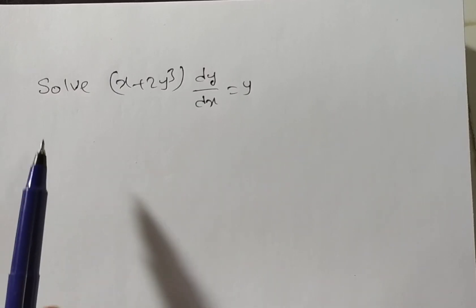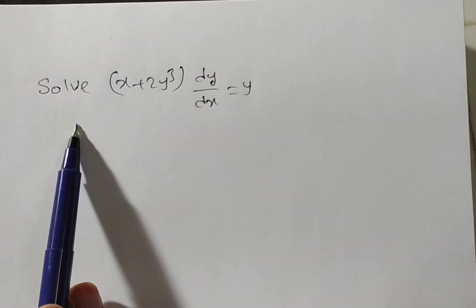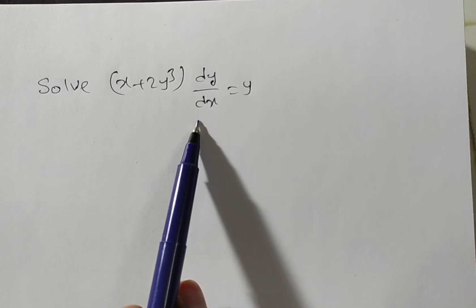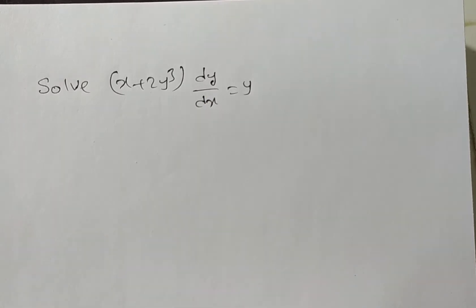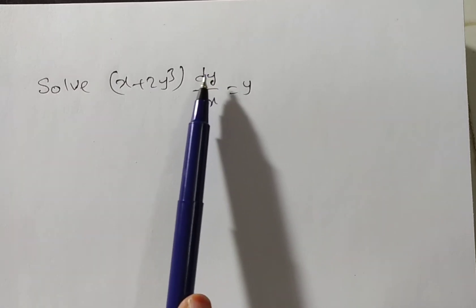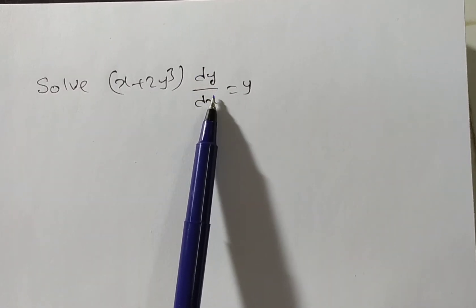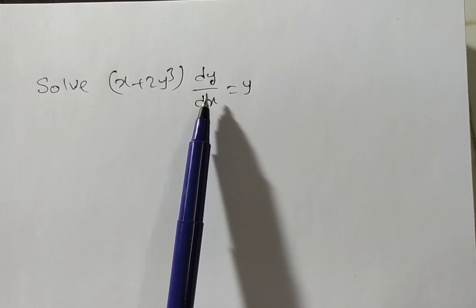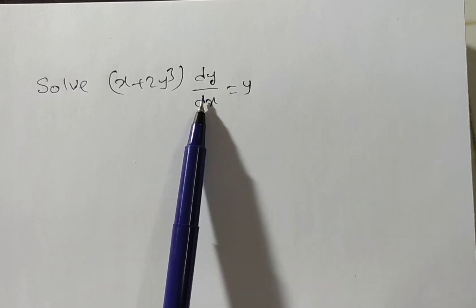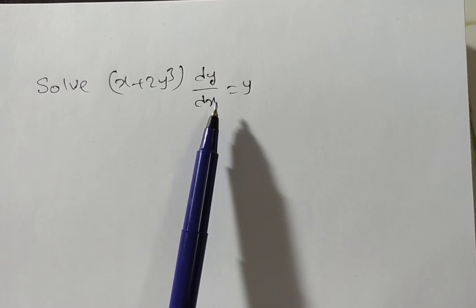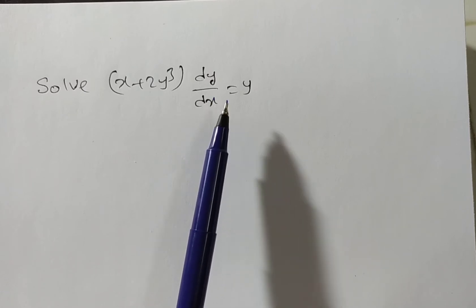Friends, the given problem is: solve (x + 2y³)(dy/dx) = y. By observation, we can say this problem has dy/dx — first derivative — so it is a first order and the degree of dy/dx is also one. So, this is a first order and first degree differential equation.